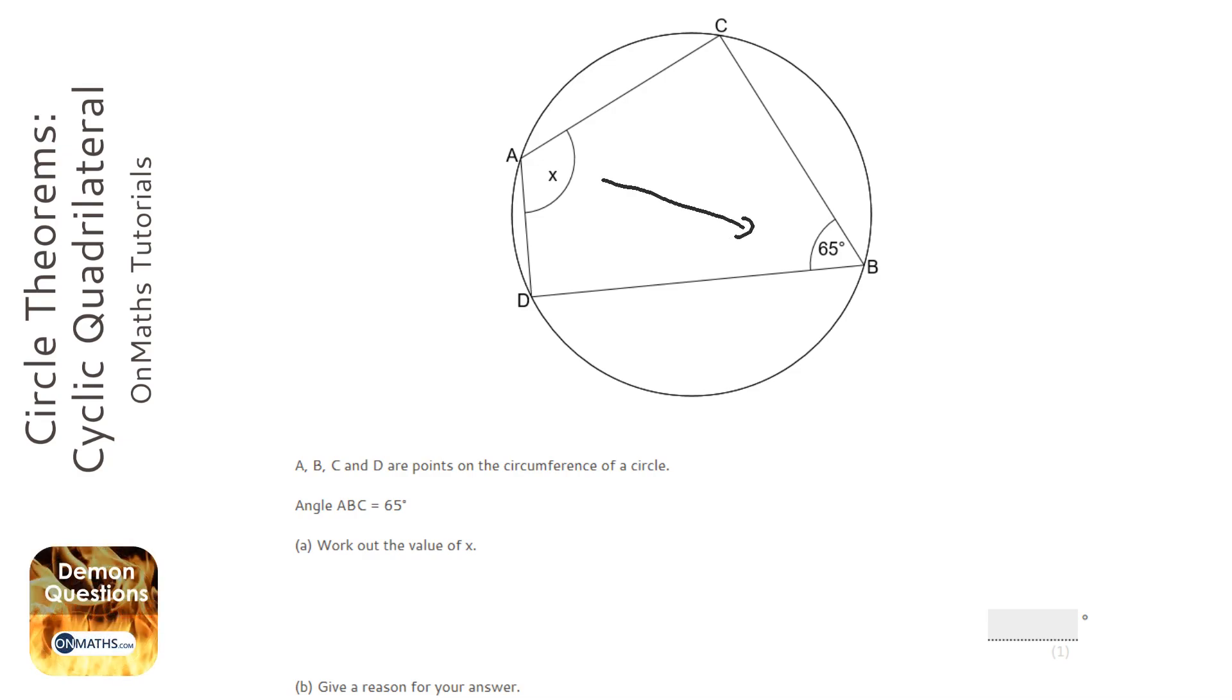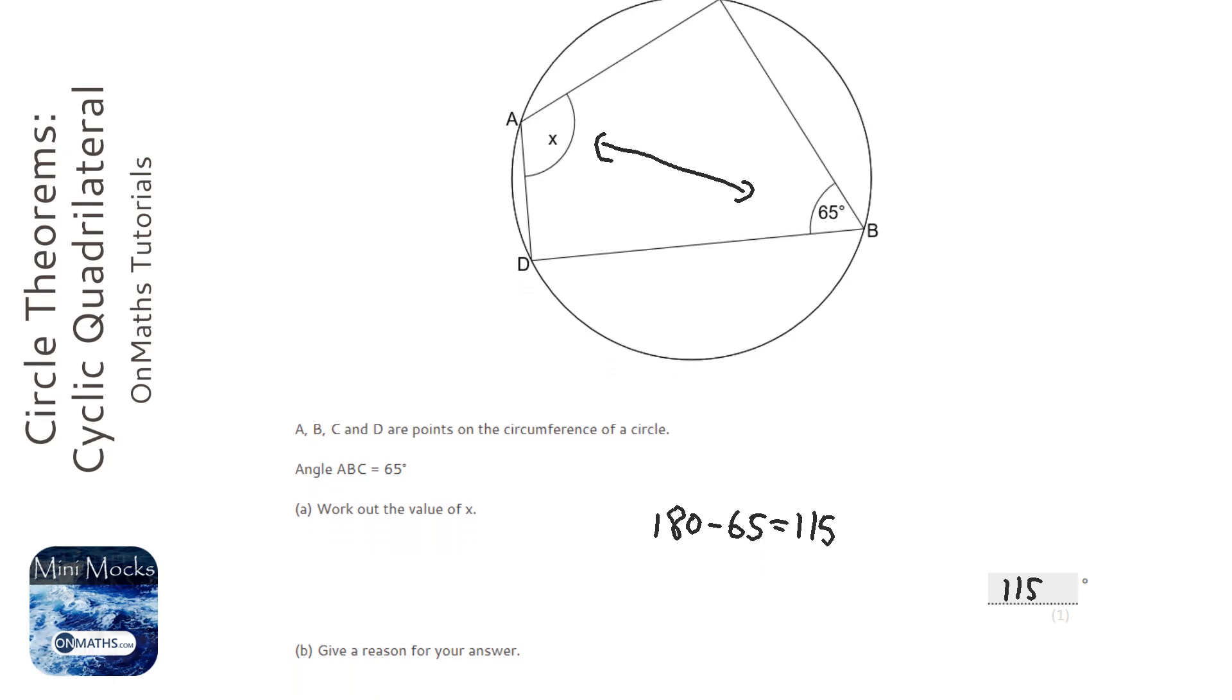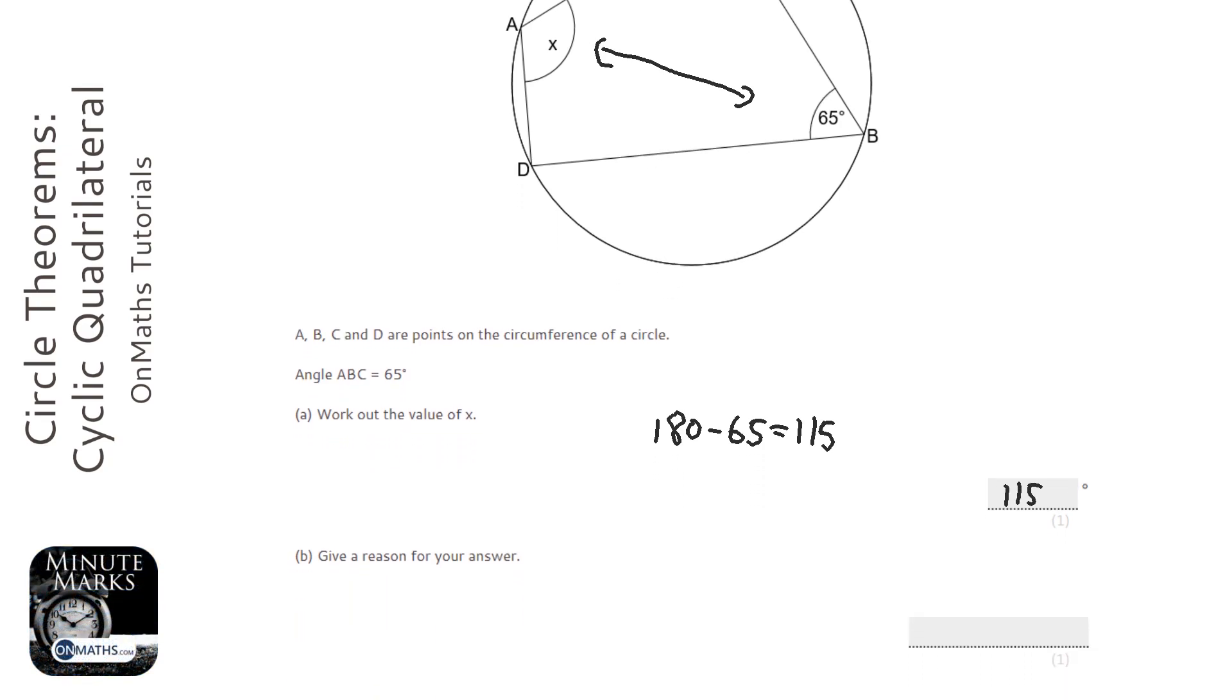The circle theorem says that opposite angles in a cyclic quadrilateral add up to 180 degrees. So we just do 180 minus 65, which equals 115 degrees. The answer is 115.